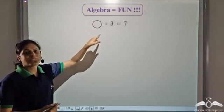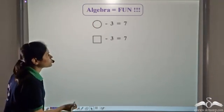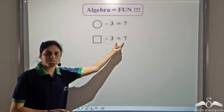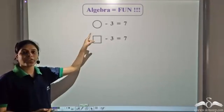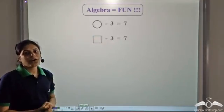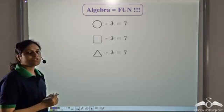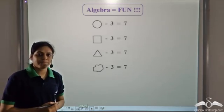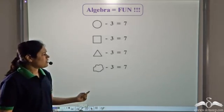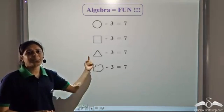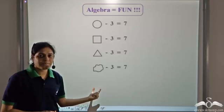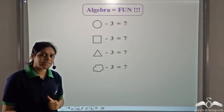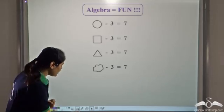Now instead of this circle, I could have used a square. So square minus three is equal to seven, and what should be there in place of this square? I might have used a triangle or any other random shape. But do you realize that making these shapes every time is really difficult? So can we use something else? Yes, we can use letters.